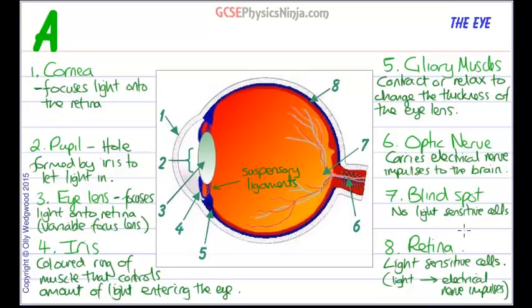So these are the 8 important parts of the eye to remember and to understand their function.